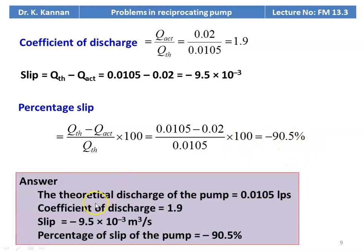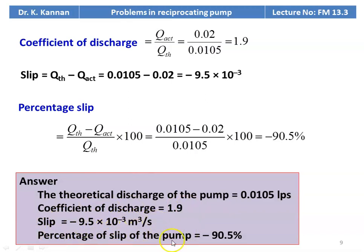Summary of answers: theoretical discharge = 0.0105 m³/s, coefficient of discharge = 1.9, slip = −9.5×10⁻³ m³/s, percentage of slip = −90.5%.